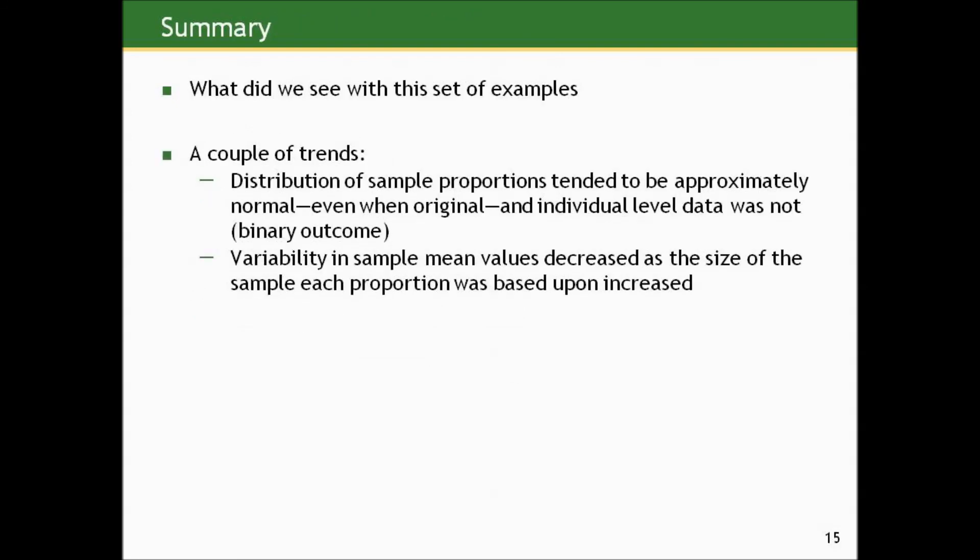So just to summarize what we saw in this set of examples, we saw a couple of trends. Distribution of sample proportions tended to be approximately normal even when the original individual level data was not. And of course, with a binary outcome that only takes on two values, it can't be. The individual level data is only a yes or a no, a one or a zero. It cannot be normally distributed.